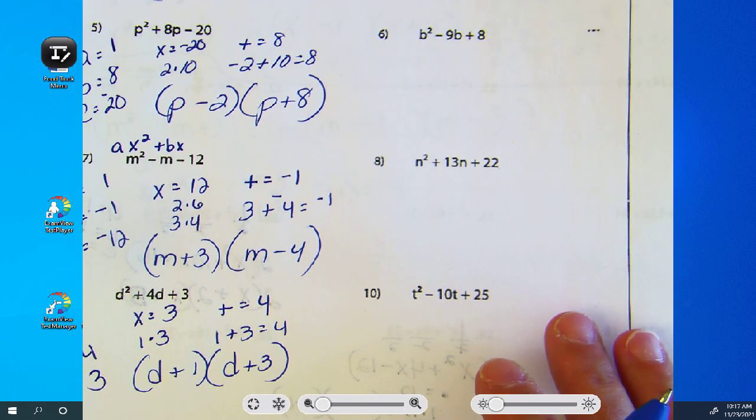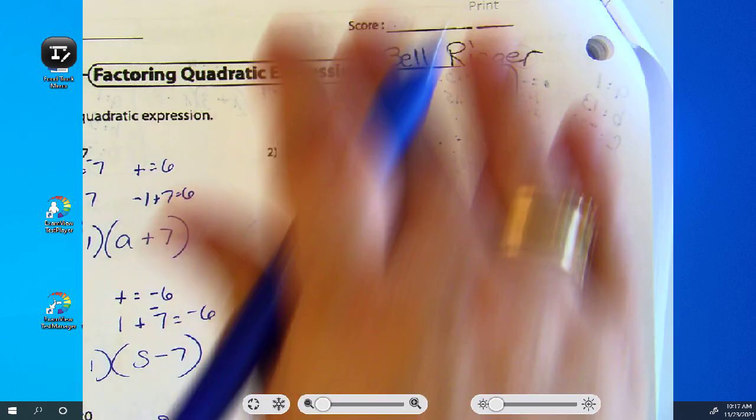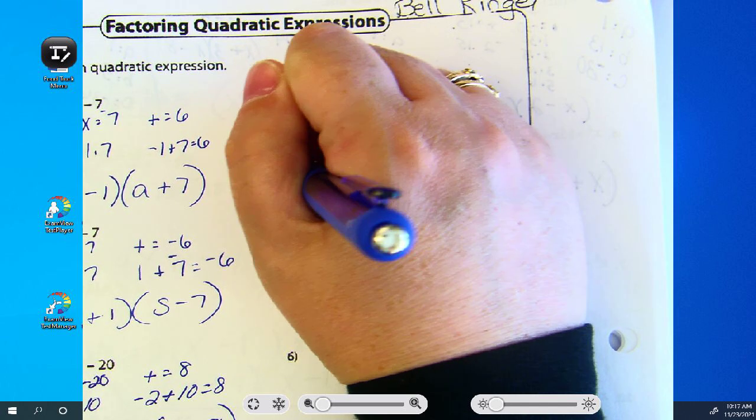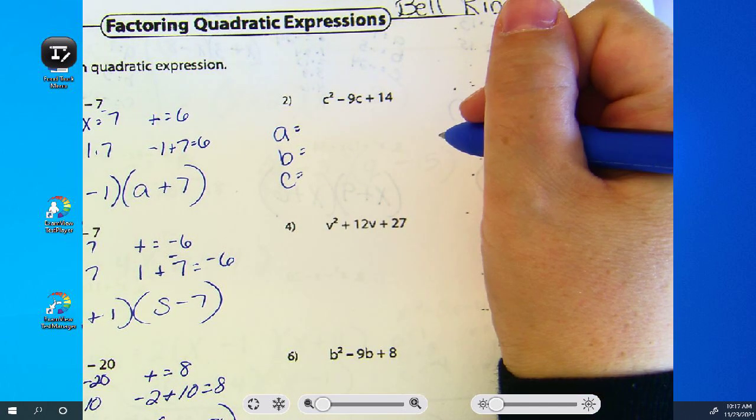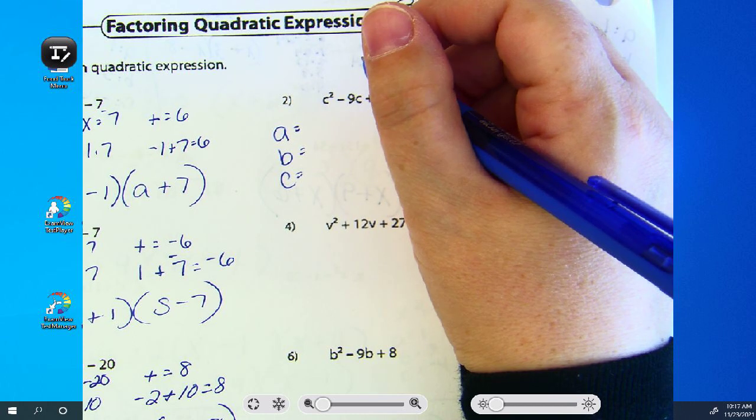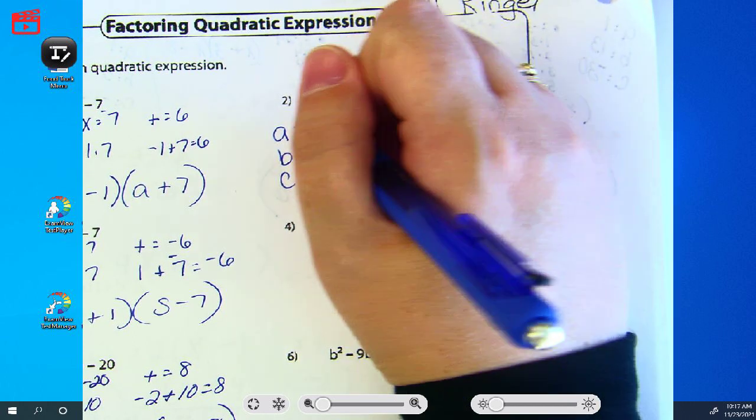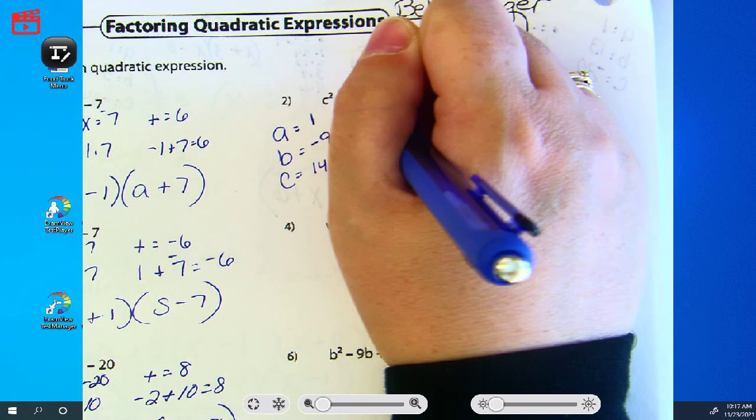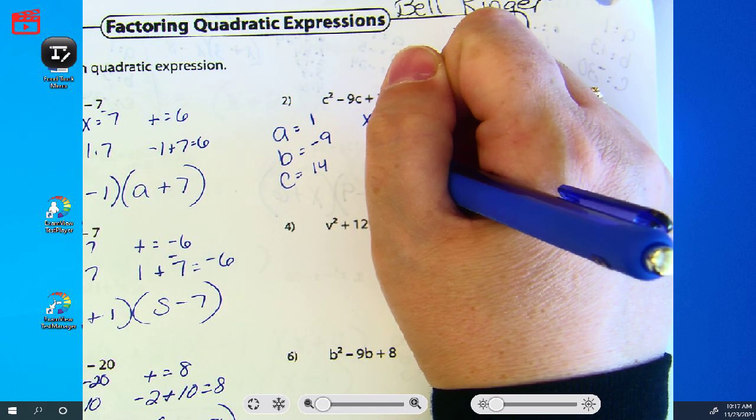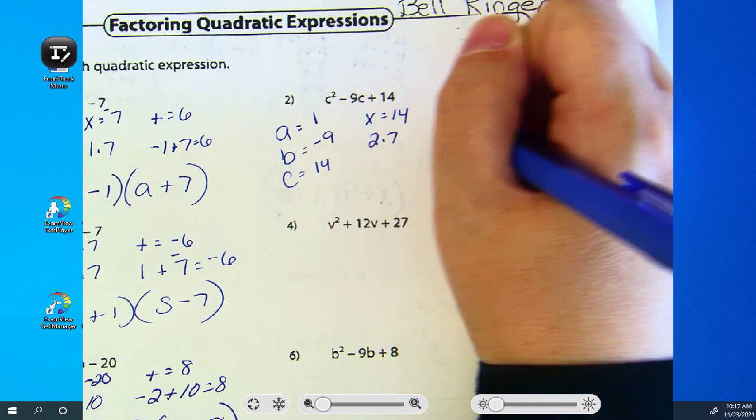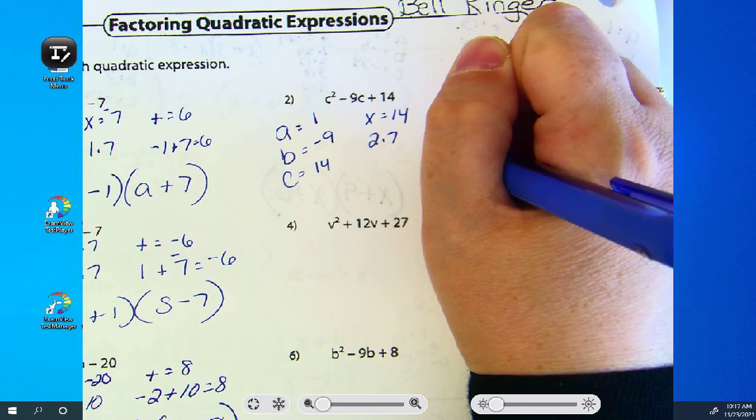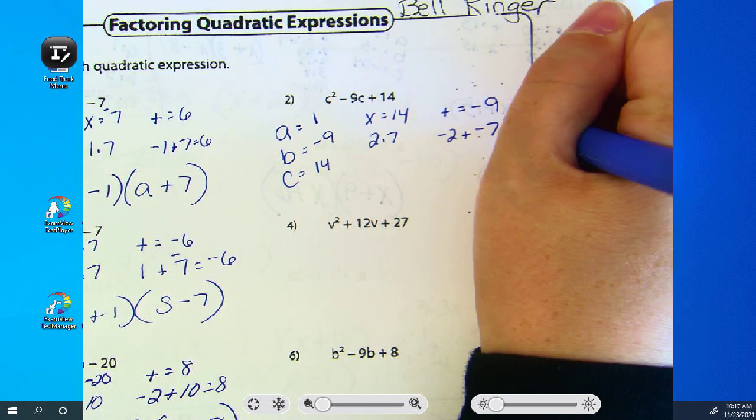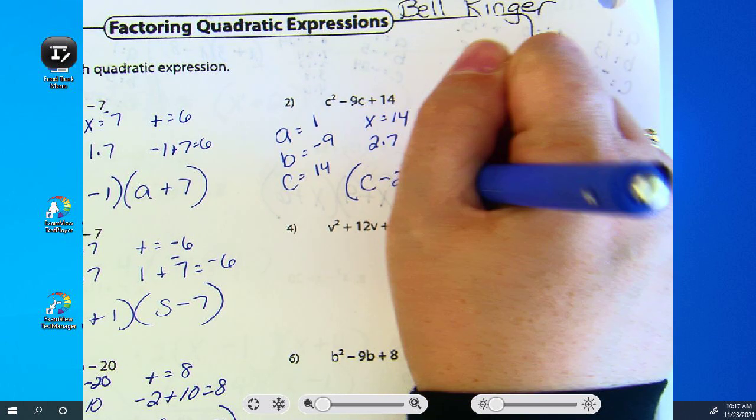Questions on the first column? Okay, second column. Riley, what's A, B, and C? Okay, so what did you find to multiply to 14? Okay, how did you get them to add to negative 9? Good. It's C minus 2, C minus 7.